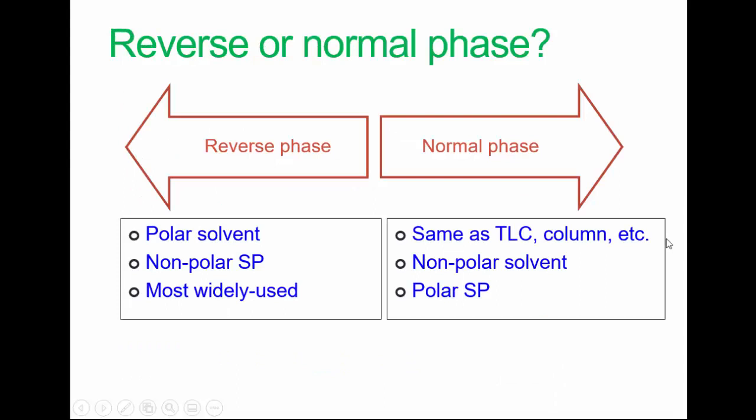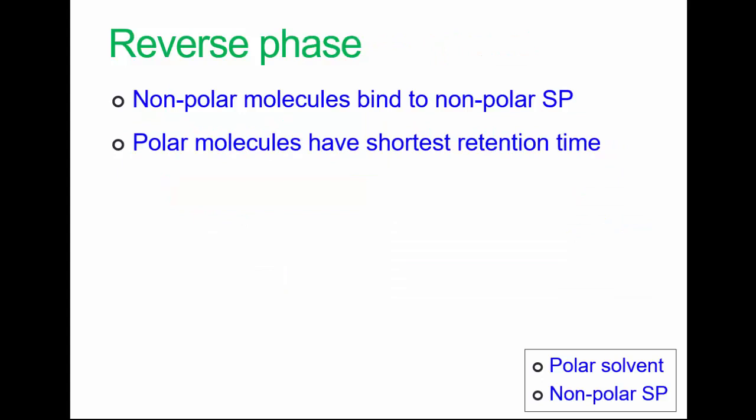Reverse and normal phase. In polarity terms, two systems are possible. Reverse and normal phase, as described above. Reverse phase is most widely used, in contrast to the TLC system we discussed earlier, which is normally normal phase. In reverse phase, non-polar molecules bind to non-polar stationary phase, giving them longer retention times than for polar molecules. So, the more polar a molecule is, the more quickly it will be eluted.